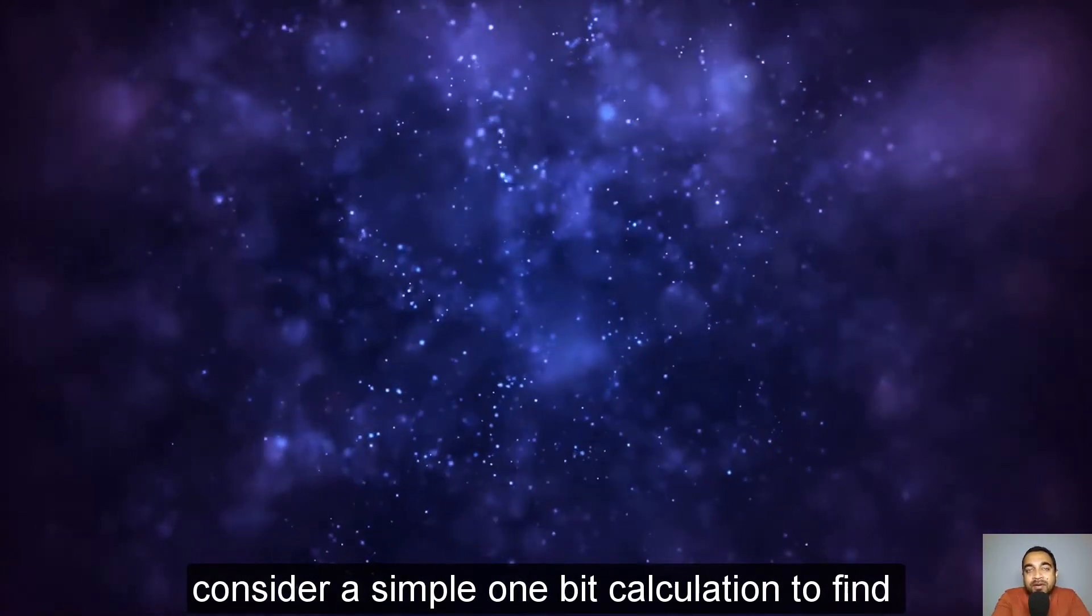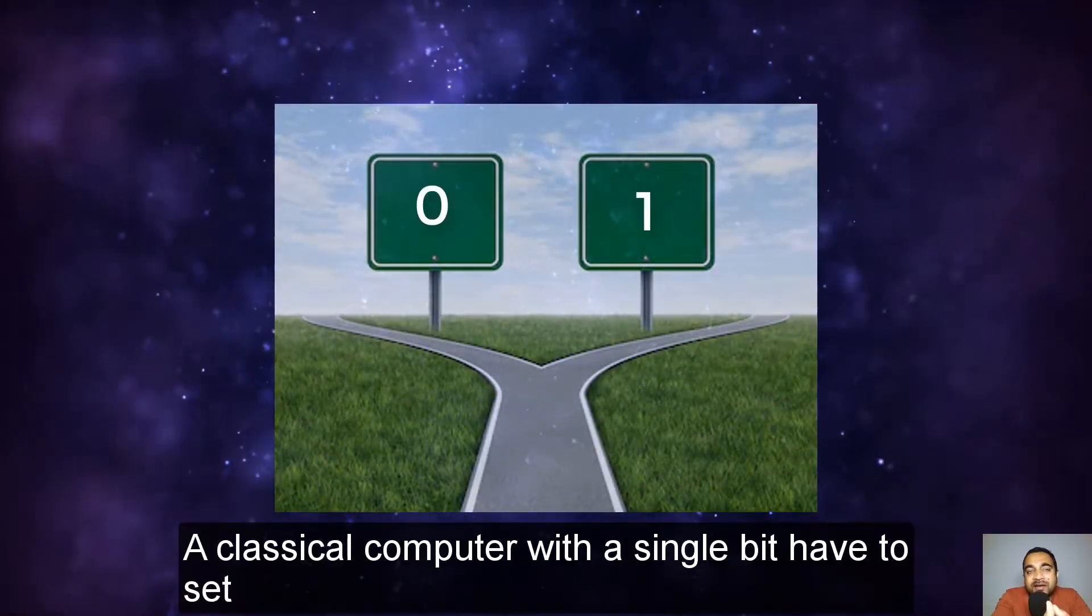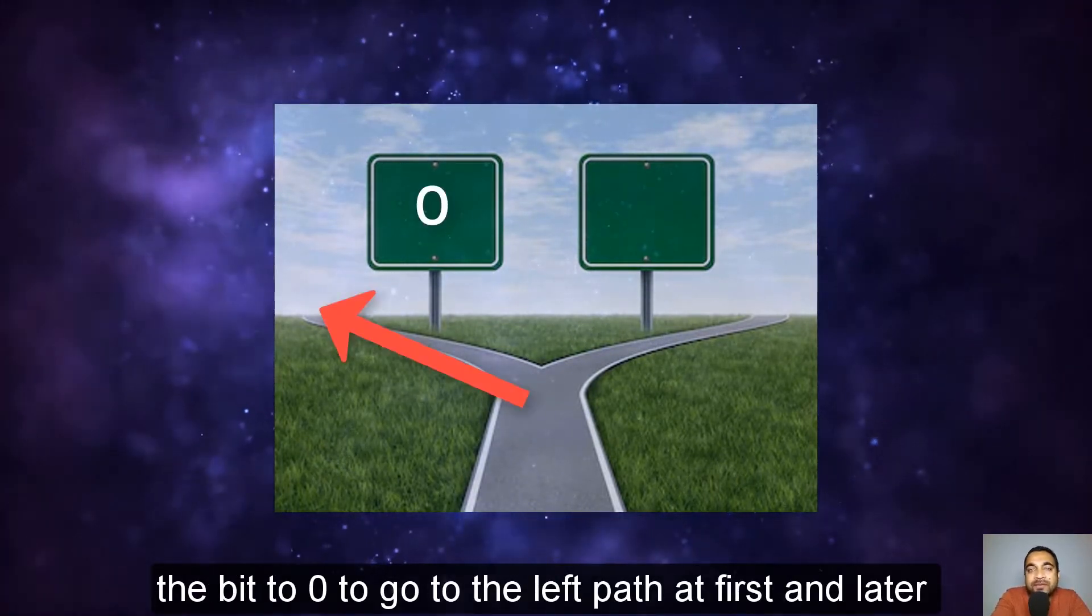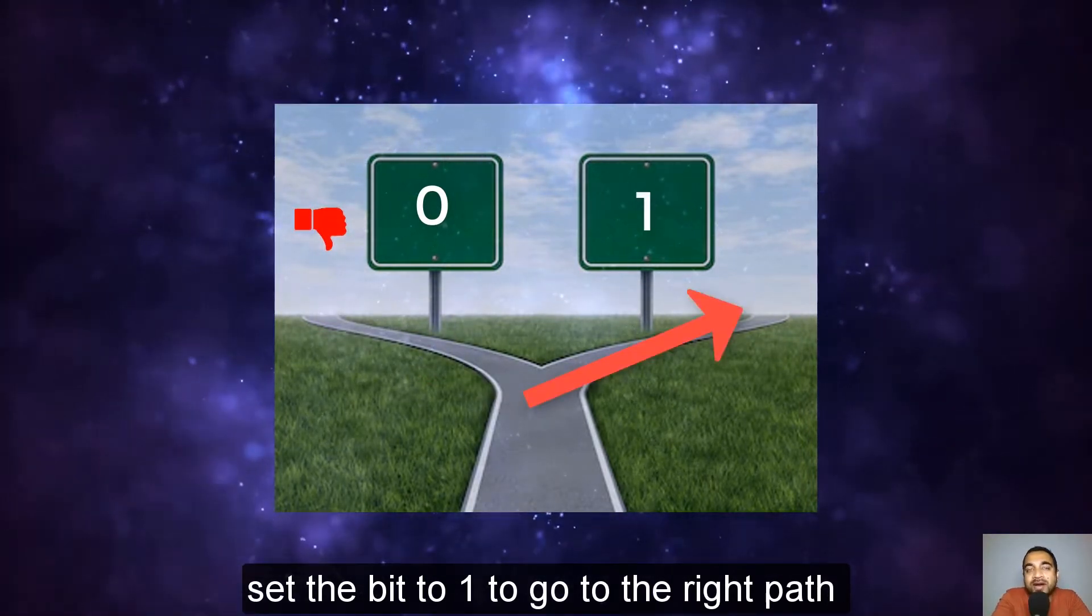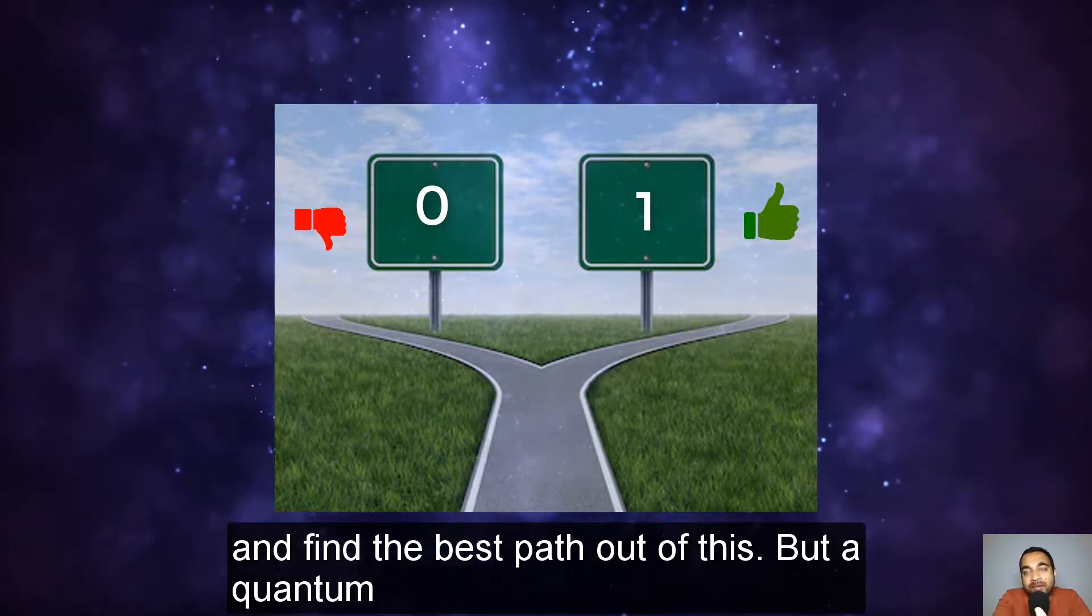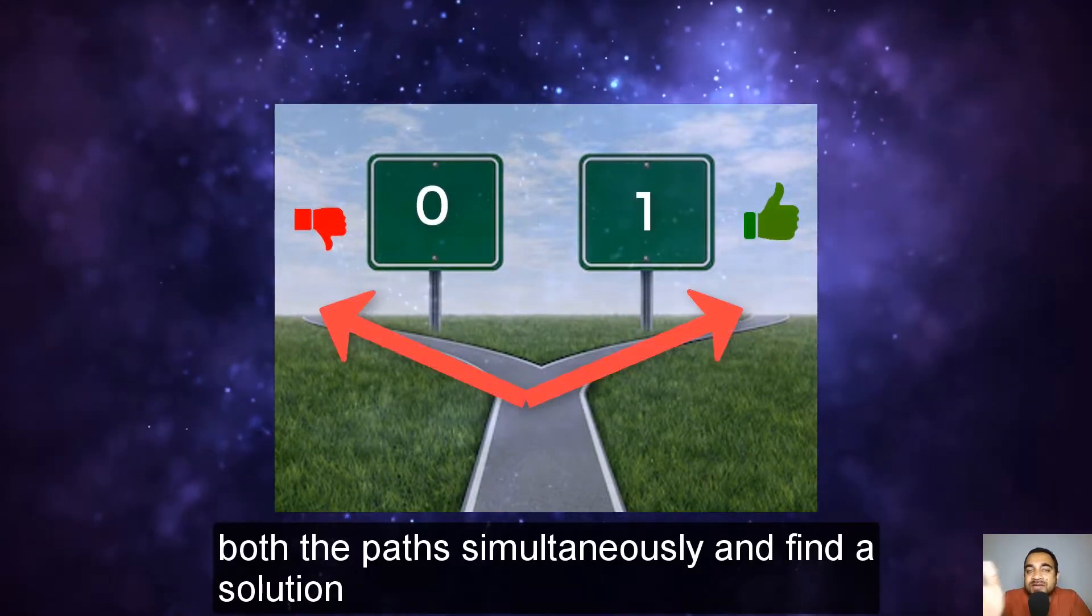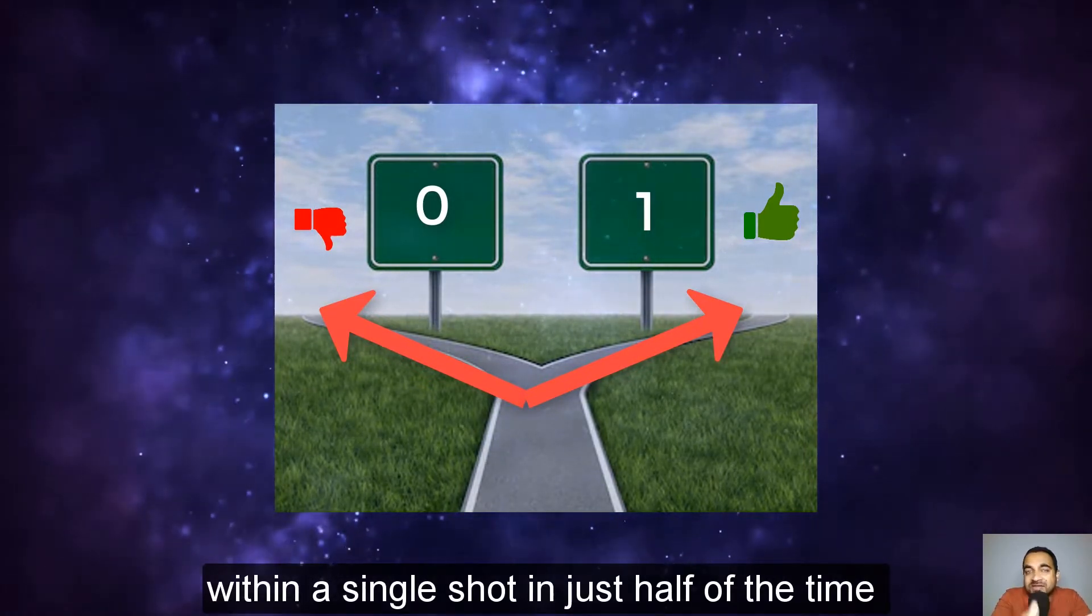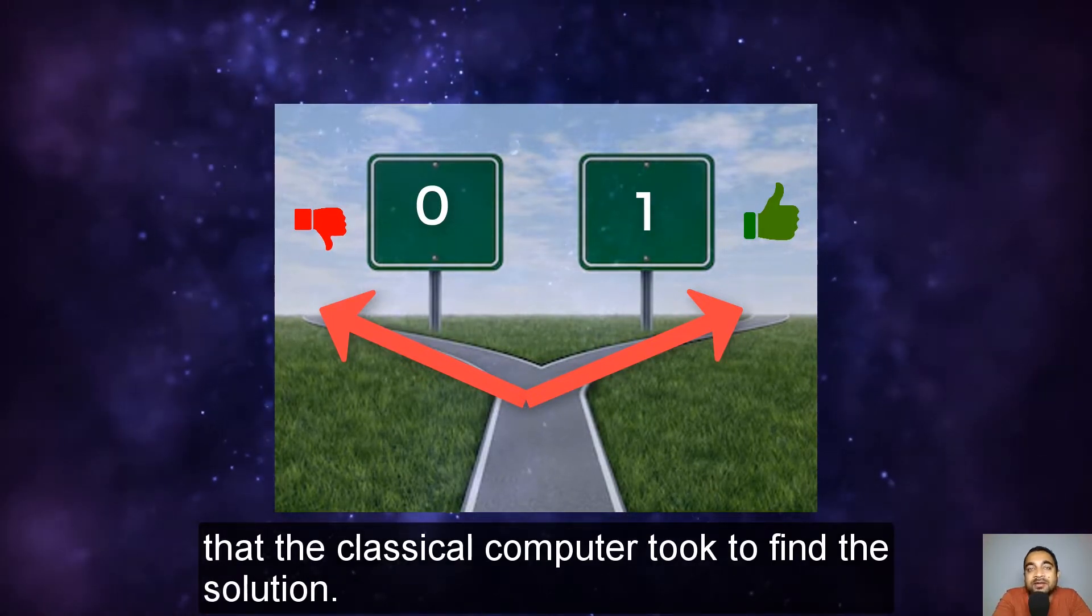For example, consider a simple 1-bit calculation to find the best path. A classical computer with a single bit has to set the bit to 0 to go to the left path at first, and later set the bit to 1 to go to the right path and find the best path out of this. But a quantum computer with a single qubit can go through both paths simultaneously and find a solution within a single shot in just half of the time that the classical computer took to find the solution.